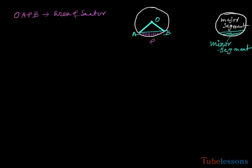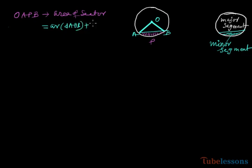The sector has two parts: one part is the area of triangle AOB, plus the area of the minor segment.